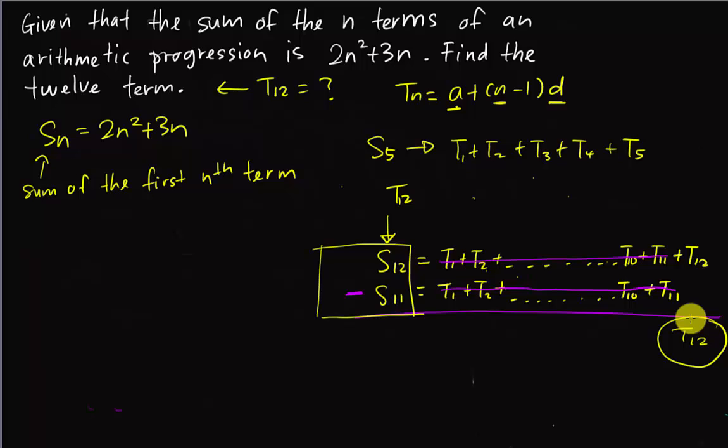Alright, I'll just do it here. I will say T12 = S12 - S11. For S12, I just substitute 12 into my n, so it's 2(12²) + 3(12) minus 2(11²) + 3(11).